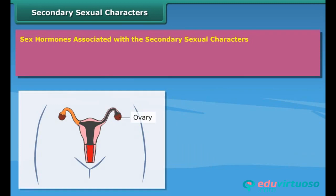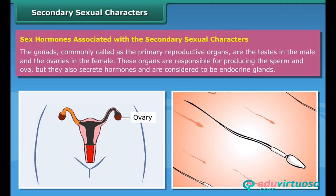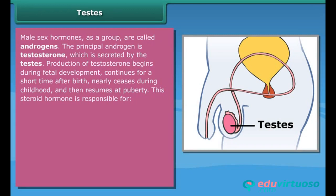Sex hormones associated with secondary sexual characters: the gonads — commonly called the primary reproductive organs — are the testes in the male and the ovaries in the female. These organs produce sperm and ova but also secrete hormones, making them endocrine glands. Male sex hormones as a group are called androgens; the principal androgen is testosterone, secreted by the testes. Testosterone production begins during fetal development, nearly ceases during childhood, then resumes at puberty, responsible for growth of male reproductive structures, increased skeletal and muscular growth, enlargement of the larynx, and growth and distribution of body hair.